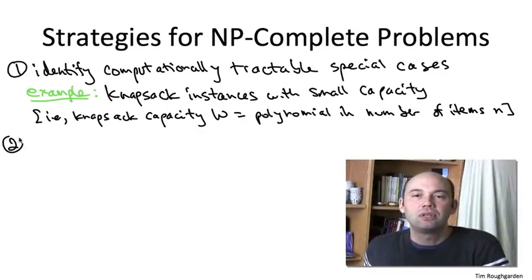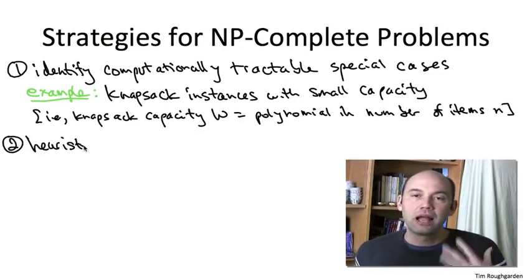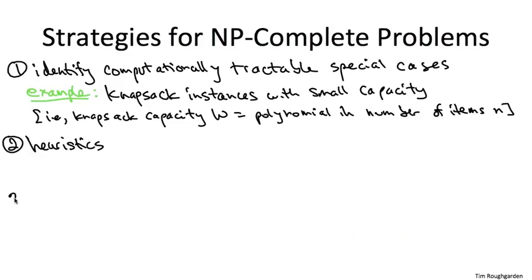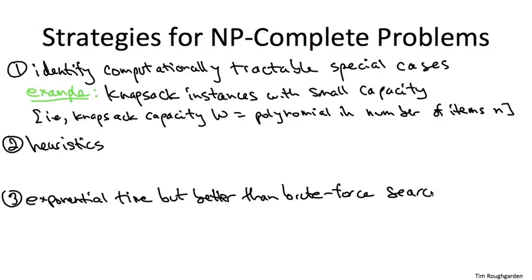The second approach is the design and analysis of heuristics, algorithms which are not guaranteed to be 100% optimal. The third strategy is to insist on a correct algorithm, and being an NP-complete problem, you're expecting to see exponential running time, but still to have running time qualitatively better than what you'd achieve with naive brute force search.